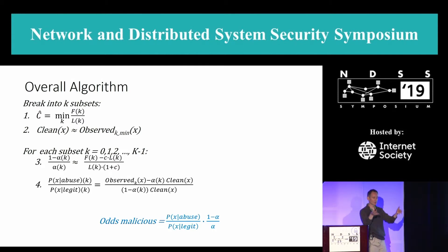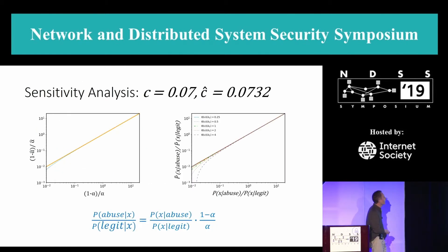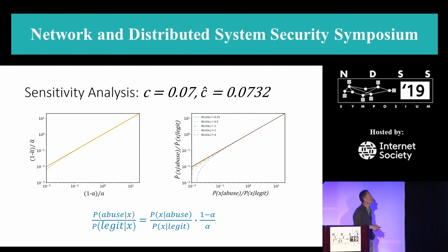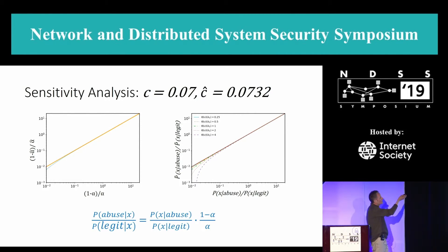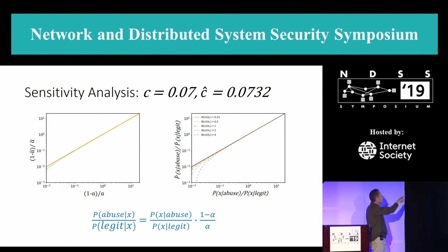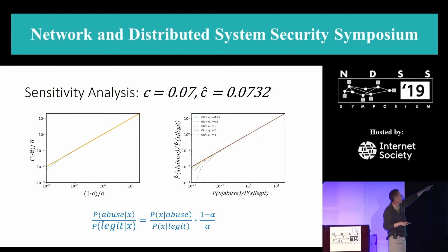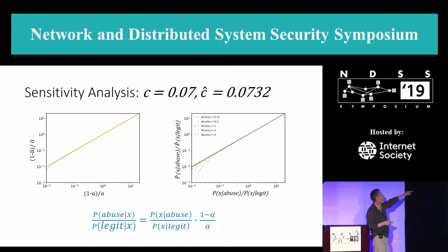The clean traffic — say the distribution of browser versions — will change somewhat, but slowly. When you're estimating stuff, you're never going to get it precisely right. But this is a sensitivity analysis showing: suppose the actual benign failure rate was 7% and we overestimated it by about 5%. The actual odds ratios — yellow is actual and blue is the estimate — show that except at very low attack volumes, your estimate is almost perfect.